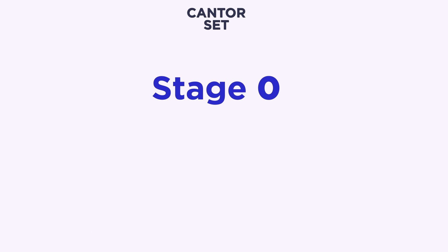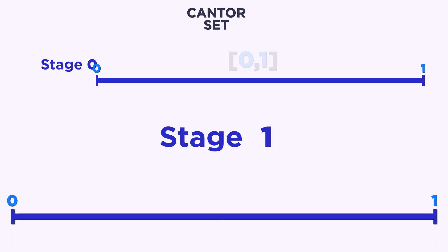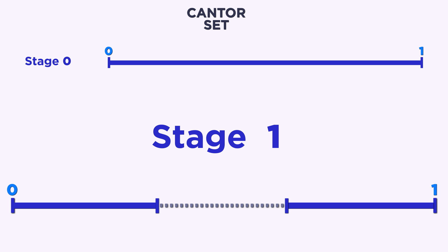Stage 0 is the closed interval 0 to 1. The fact that it's closed, indicated with square brackets, means that the interval includes the endpoints 0 and 1. In stage 1, remove the middle third, the open interval 1/3 to 2/3. That leaves us with 0 to 1/3 and 2/3 to 1.